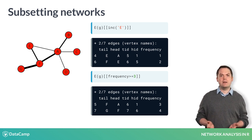In the second example, we subset all edges that have a frequency of greater than or equal to 3. This can be very useful in large networks to identify interesting relationships.